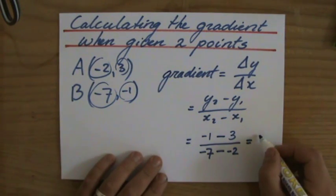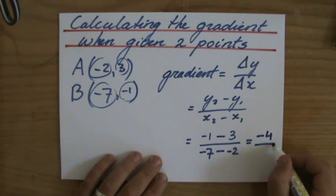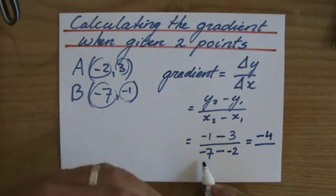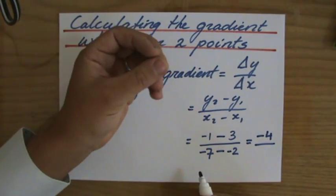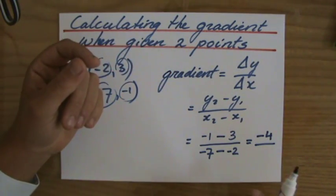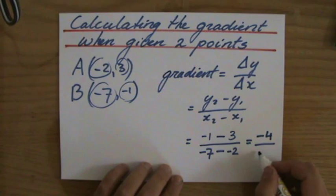Minus 1 minus 3, that's minus 4 divided by minus 7 minus minus 2. So that's actually minus 7 plus 2. And your calculator will even tell you that. Minus 7 plus 2, which is minus 5.